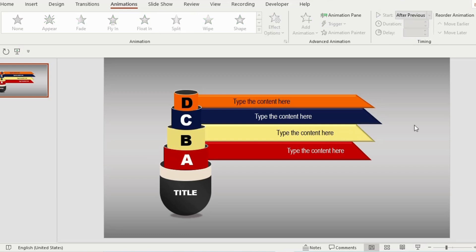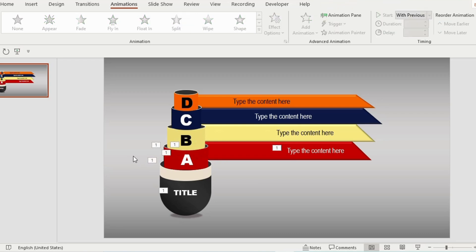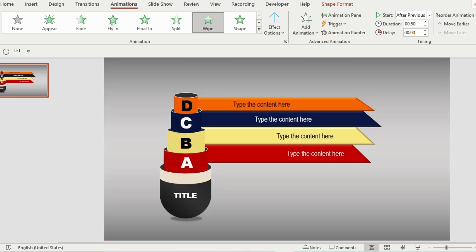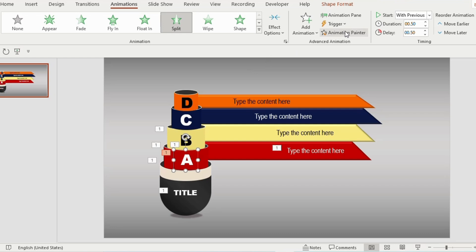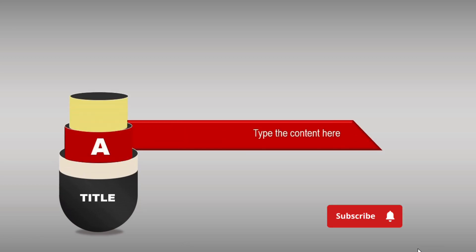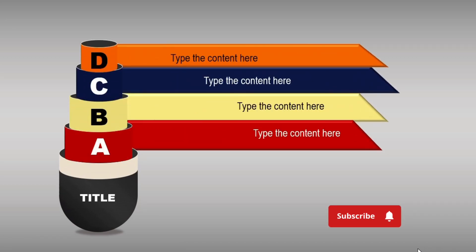Apply the same kind of animation to all the above shapes. You can use Animation Painter to save time — click on the previously animated shape, choose Animation Painter, and click on the shape where you want to apply the animation. Once everything is animated, click on Slide Show to see the results. If you found this video useful and informative, please like, share, and subscribe. Thank you for watching.